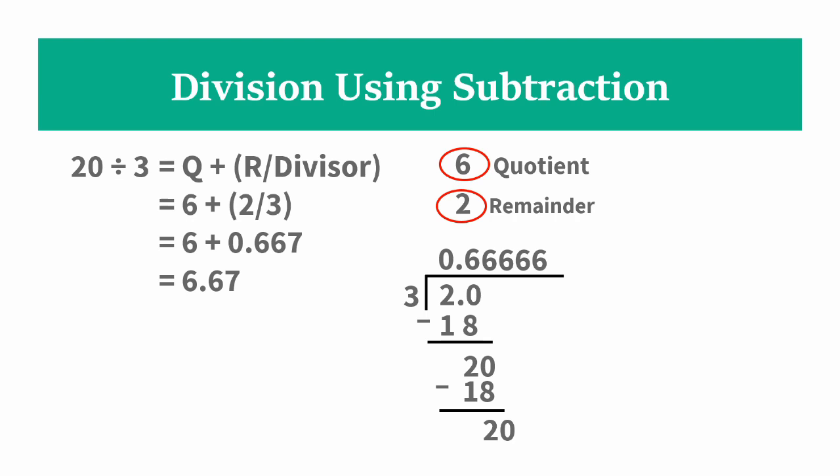So the remainder is not 0.67 — 0.67 is actually the decimal representation of the remainder divided by the divisor. Therefore, if we divide 20 by 3, the complete answer in decimal is 6.67. But if we want to separate: the quotient is 6 and the remainder is 2.